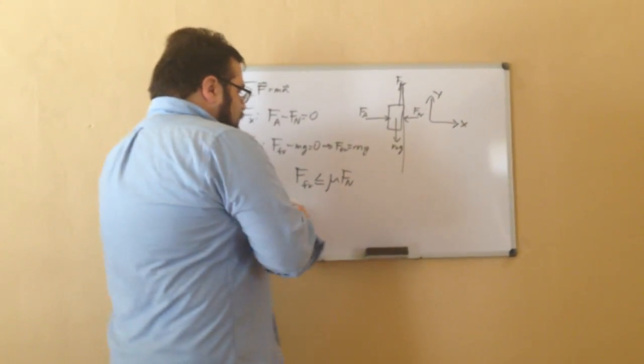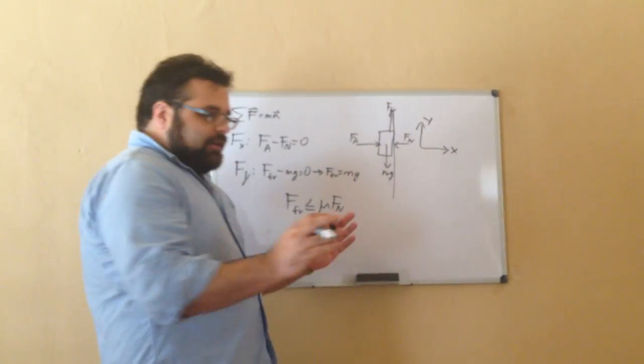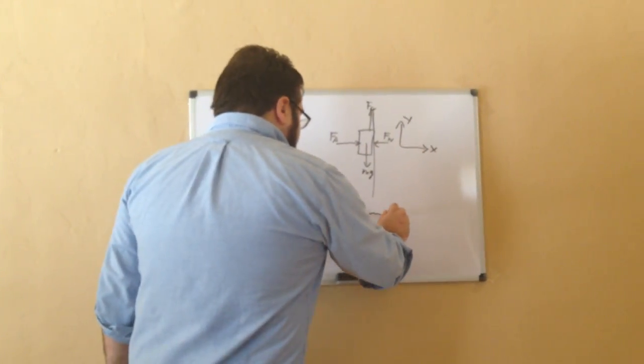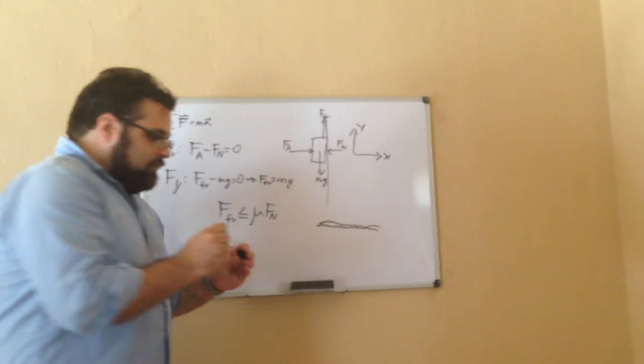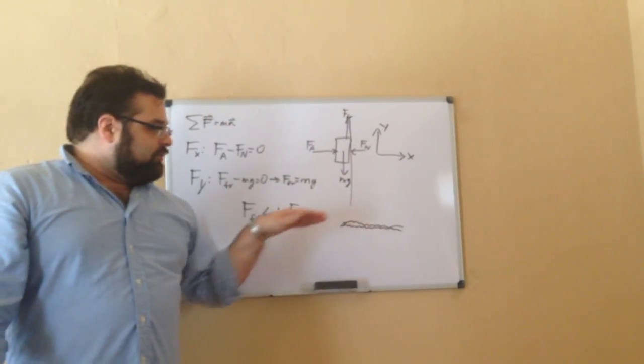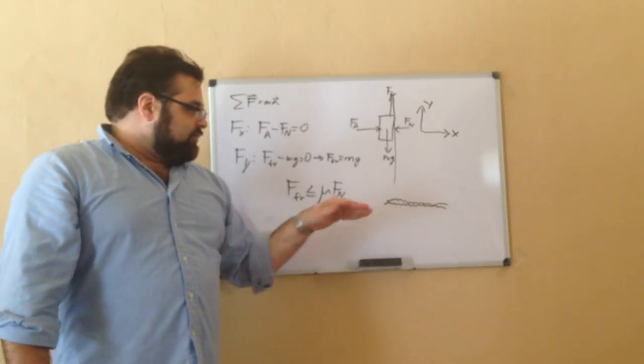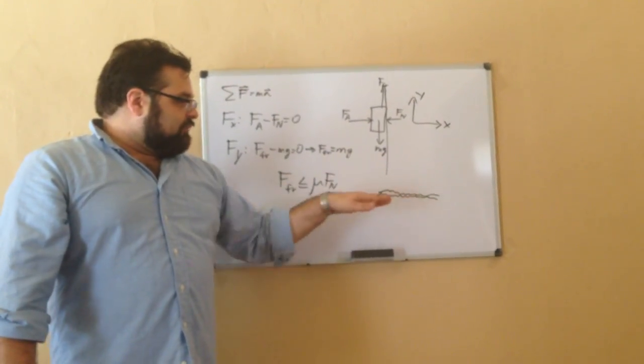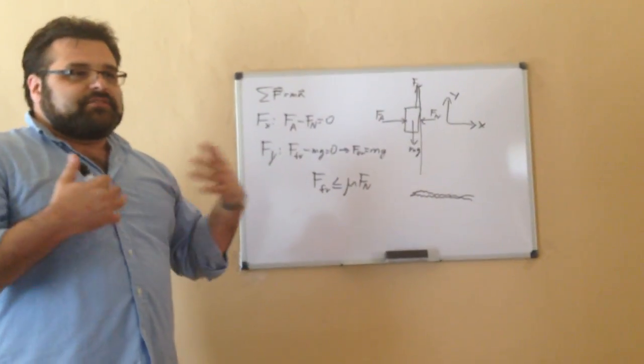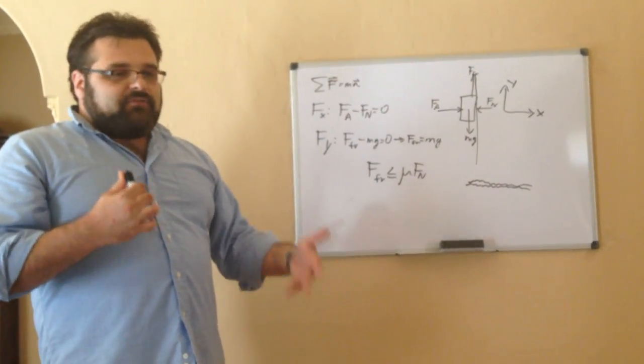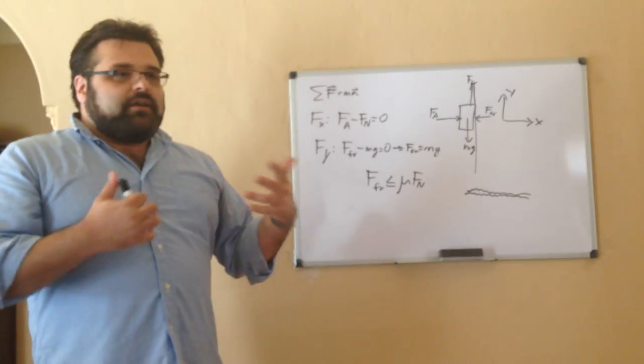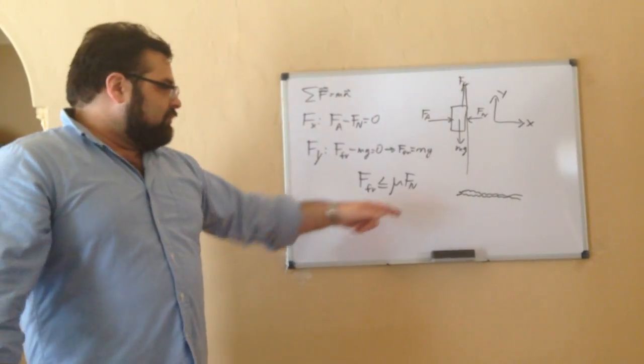Friction occurs because when you actually look at an object, no matter how flat it appears, there's always going to be some sort of roughness to the surface. When the objects are moving or trying to move relative to each other, the bumps on the surface prevent it from moving smoothly. An object that's very rough will have a higher value of mu, and an object that's smooth will have a smaller value of mu.